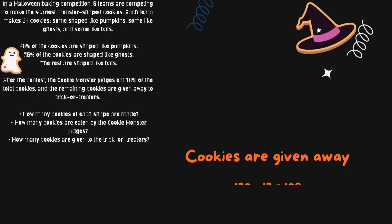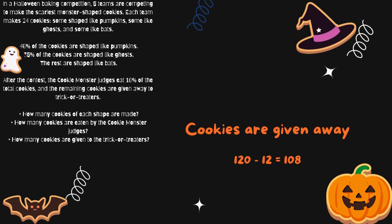Next we'll find out how many cookies are given to the trick-or-treaters. To find out how many cookies are given away, you take the total number of cookies, which is 120, and subtract the cookies eaten by the judges, which are 12. This means 108 cookies are given to the trick-or-treaters.